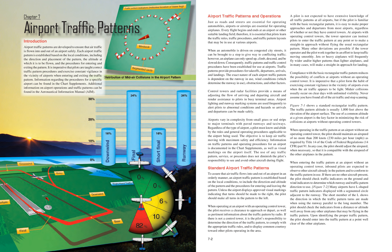Traffic patterns provide procedures for takeoffs, departures, arrivals, and landings. The exact nature of each airport traffic pattern is dependent on the runway in use, wind conditions, obstructions, and other factors. Controlled towers and radar facilities provide a means of adjusting the flow of arriving and departing aircraft and render assistance to pilots in busy terminal areas. Airport lighting and runway marking systems are used to alert pilots to abnormal conditions and hazards so arrivals and departures can be made safely. The objective is to keep air traffic moving with maximum safety and efficiency.